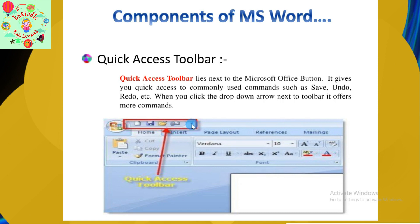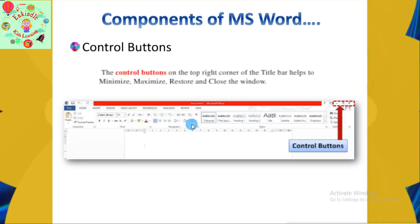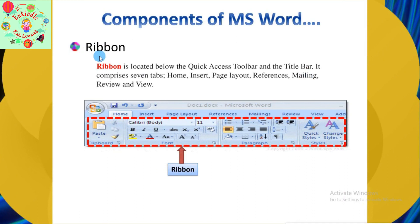When you click on the drop-down arrow you will get some more commands. The next component is the Control Buttons. The Control Buttons are located in the top right corner of the Title Bar and help to minimize, maximize, restore, and close the window.